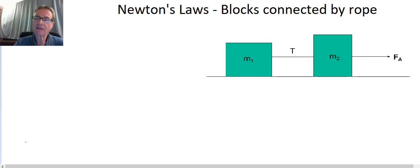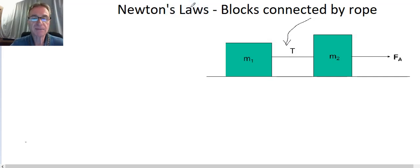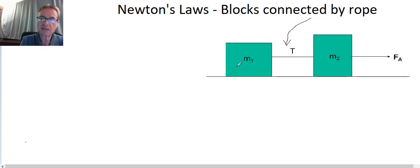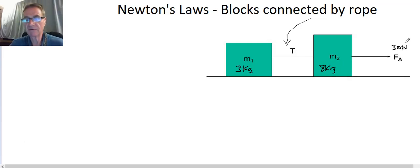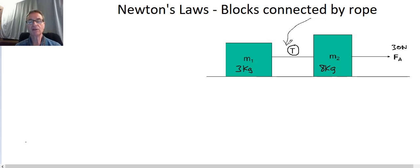We'd like to figure out the tension on a rope connecting the two blocks, which have different masses. This block has a mass of 3 kilograms and the other has a mass of 8 kilograms. We're pulling with an applied force of 30 newtons. We want to figure out two things: the acceleration of the system, and the tension in the rope between the two blocks.